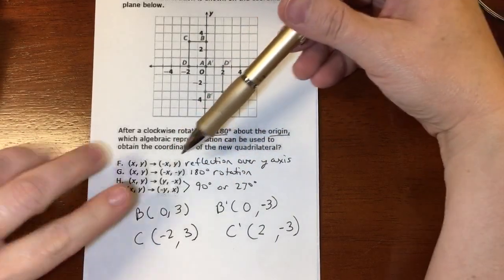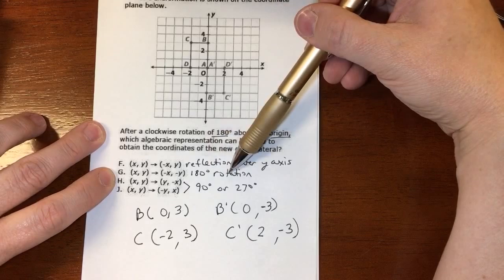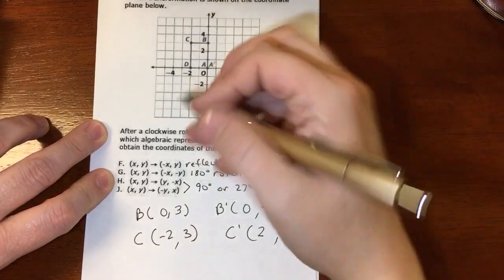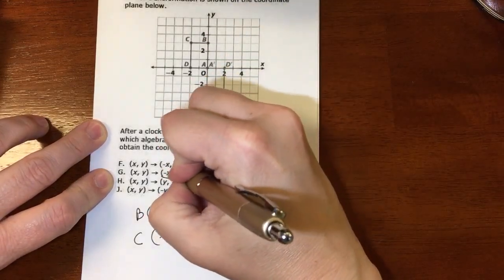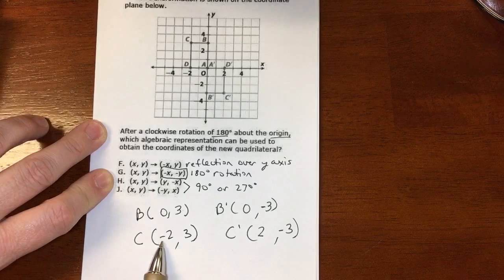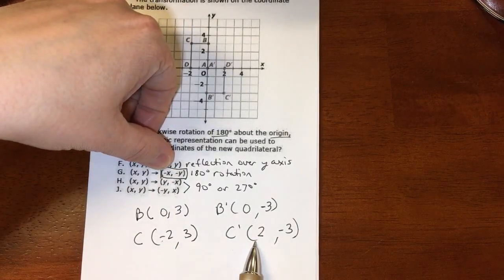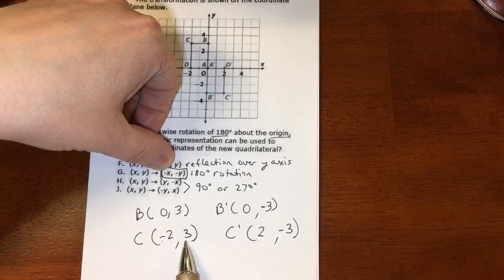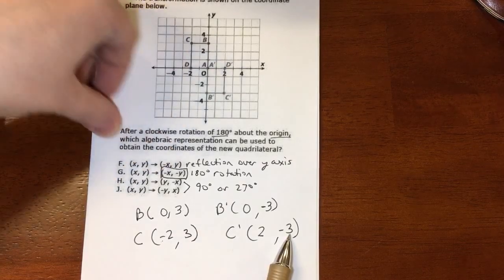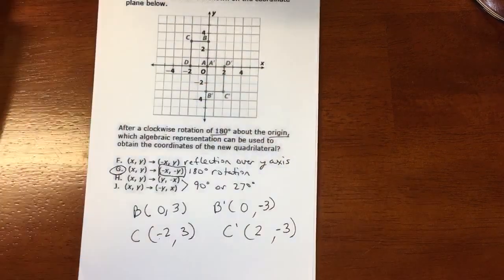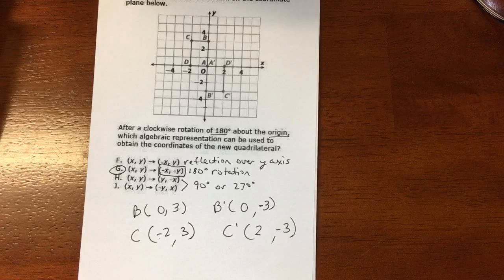So my 180-degree rotation has both of them changing to the opposite. So this was negative, now it's positive - that's what happens when I multiply by negative. This was positive, now it's negative. So I can tell the 180-degree rotation would be G.